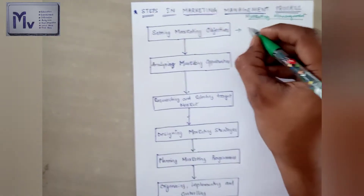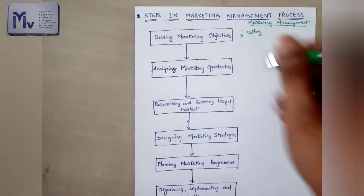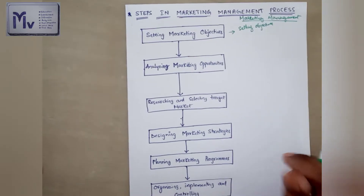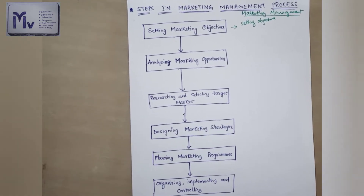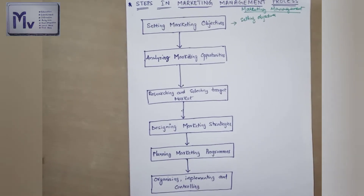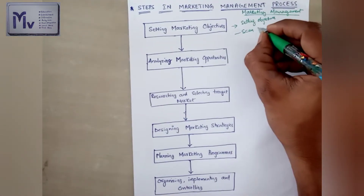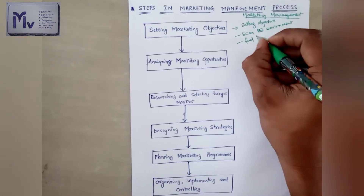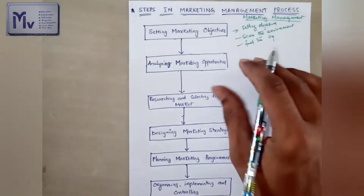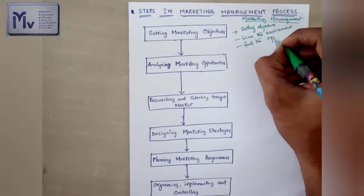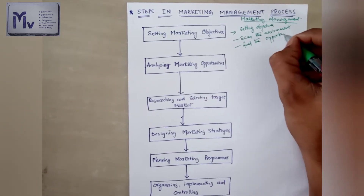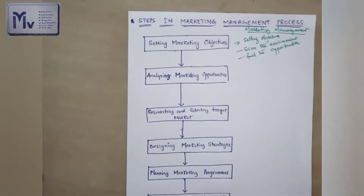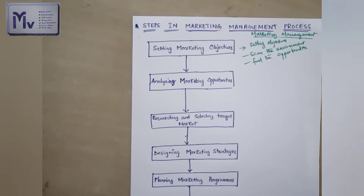Firstly, we come across setting marketing objectives. The process of marketing management starts with setting objectives. The organizational mission provides the priorities to scan the environment and find the opportunities. It provides the priorities for scanning the market environment and finding the opportunities.